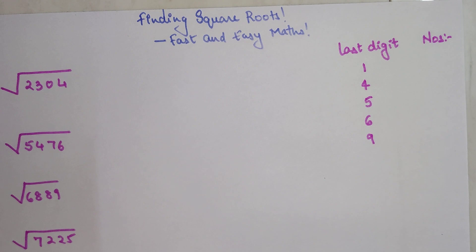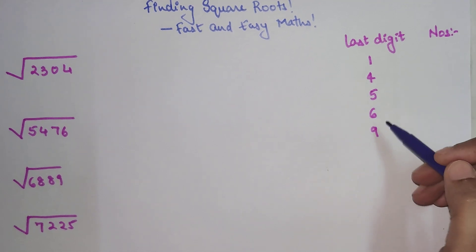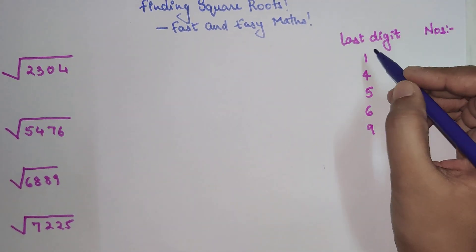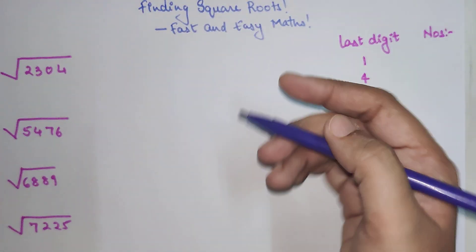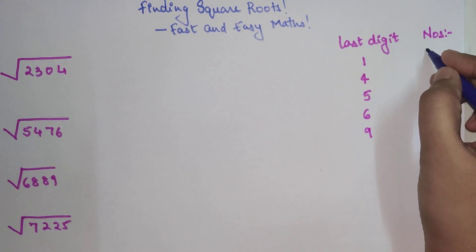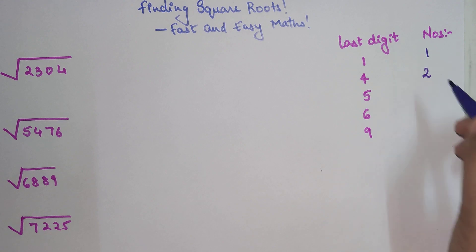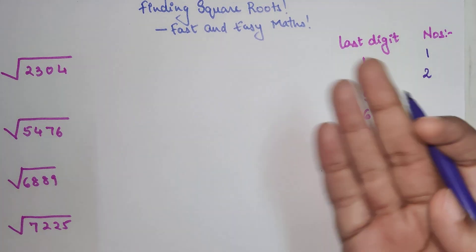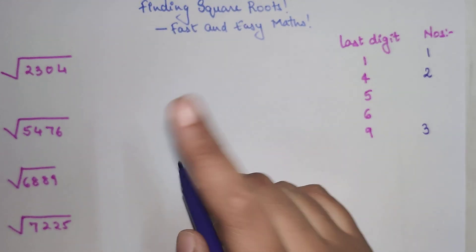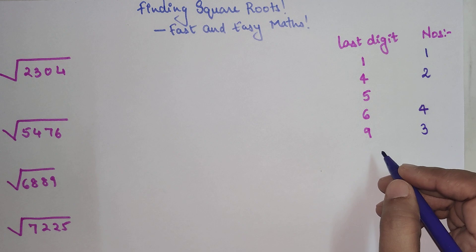Please pay very close attention to this table which I am going to complete right now. This table shows the last digit of perfect squares. Square of 1 gives unit digit 1, square of 2 gives unit digit 4, square of 3 gives unit digit 9, and square of 4 gives 16, so the last digit is 6.